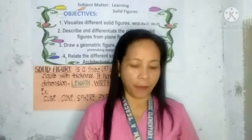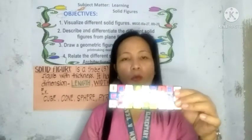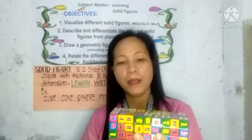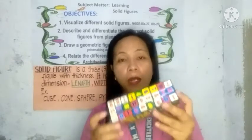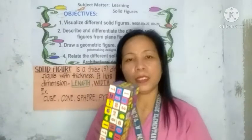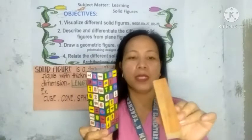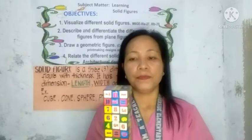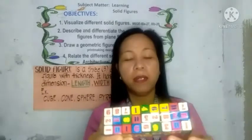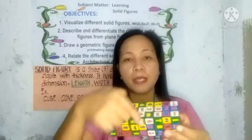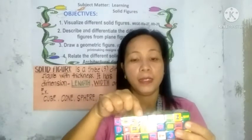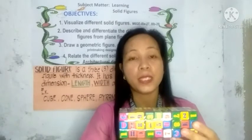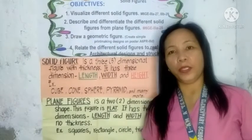Here is another example of a rectangular prism. What is the difference between this one and the previous rectangular prism? The difference is that here, all four sides are equally the same — congruent.